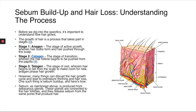The second stage is the catagen phase, which is the stage of transition wherein the hair follicle begins to be pushed from the papilla. The third stage is the telogen stage — the stage of rest where hair begins to fall out from the scalp to make room for new anagen phase growth.